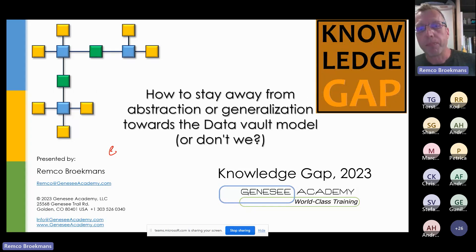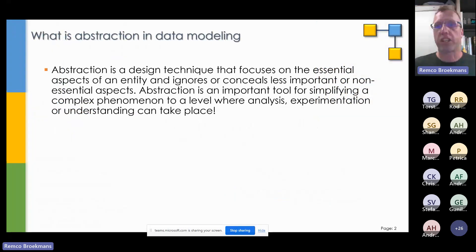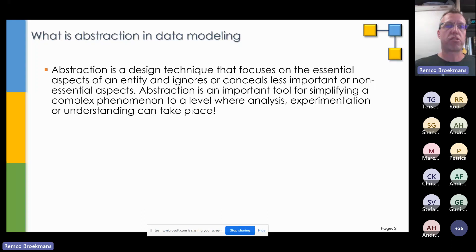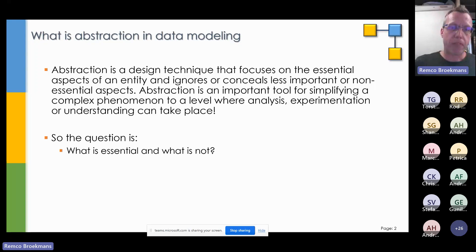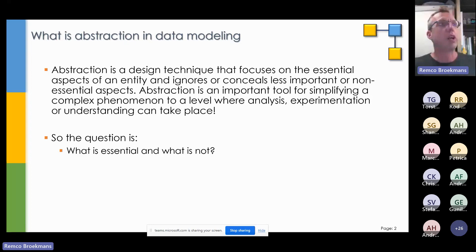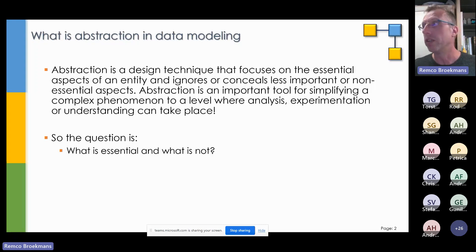So we need to find a way to stay away from abstraction generalization. Why should we stay away from it? Abstraction is a technique to say: this is an essential aspect of the entity, and we're going to ignore or hide all the stuff we think is less important or non-essential. But the question is really: what do we think is essential, and what is not? I have an example about how people are using abstraction in data modeling and where it really doesn't make sense, especially not when you want to go to what we call the ensemble logical model, which is a perfect fit for ANC modeling.